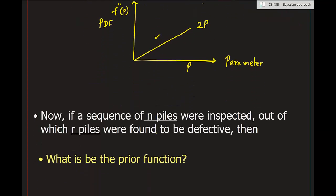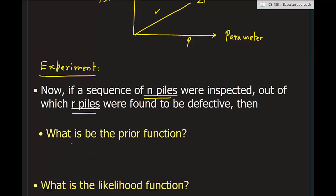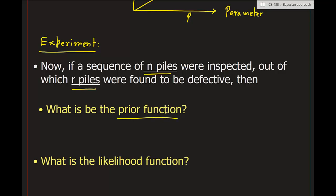Now let us revise the problem. We conduct more experiments and obtain more data. Suppose n piles were tested or inspected, and out of these, r piles were found to be defective. We apply Bayes' theorem again — the prior distribution remains the same uniform prior from the first case.